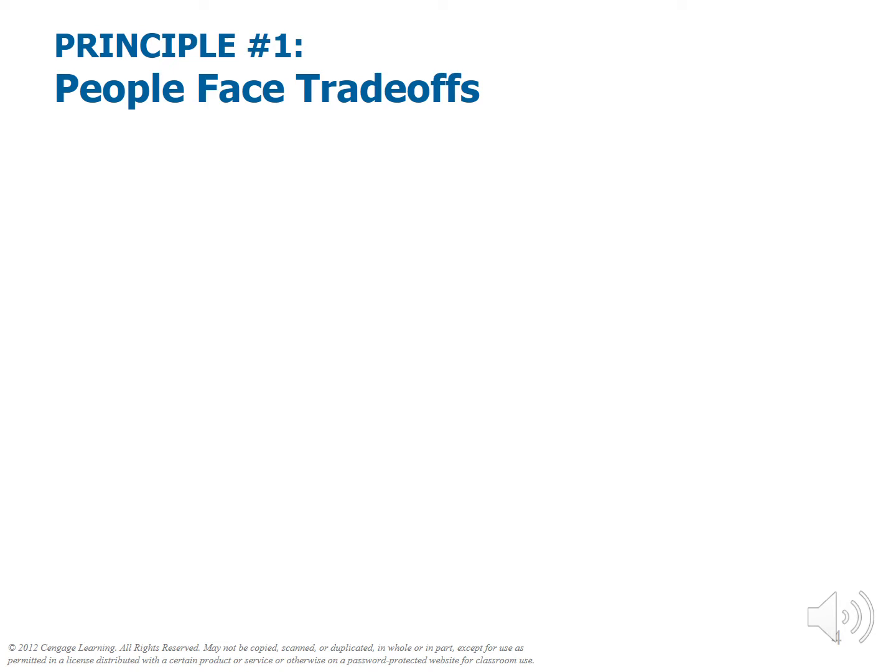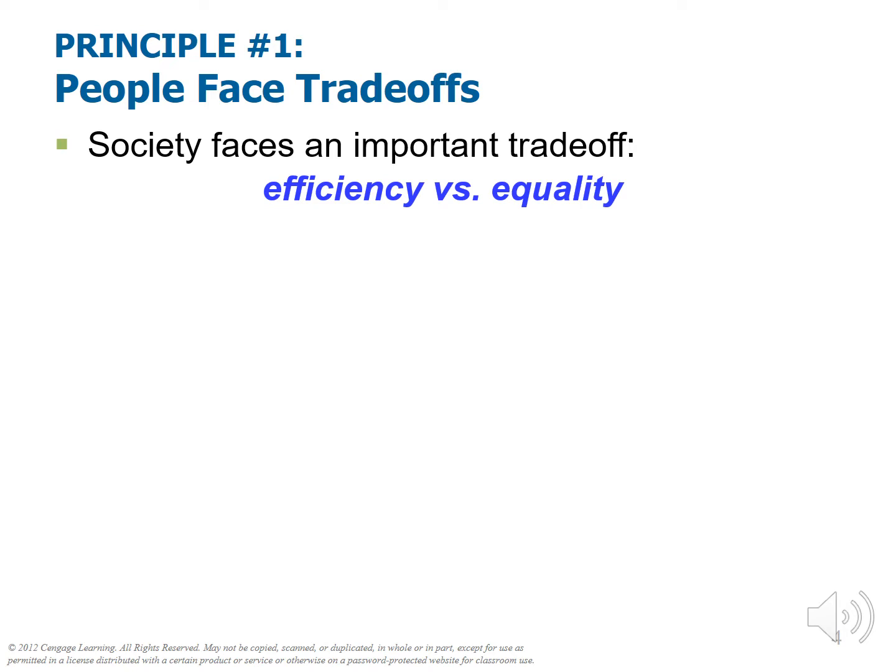Society faces an important trade-off — a ubiquitous one that shows up in a lot of different places with a lot of different faces — and that is the trade-off between efficiency and equality. Efficiency is a term you'll come to know very well as an economist. Efficiency is when you squeeze the most that you can from your scarce resources. At a social level, it's when society gets the most it can from its scarce resources.